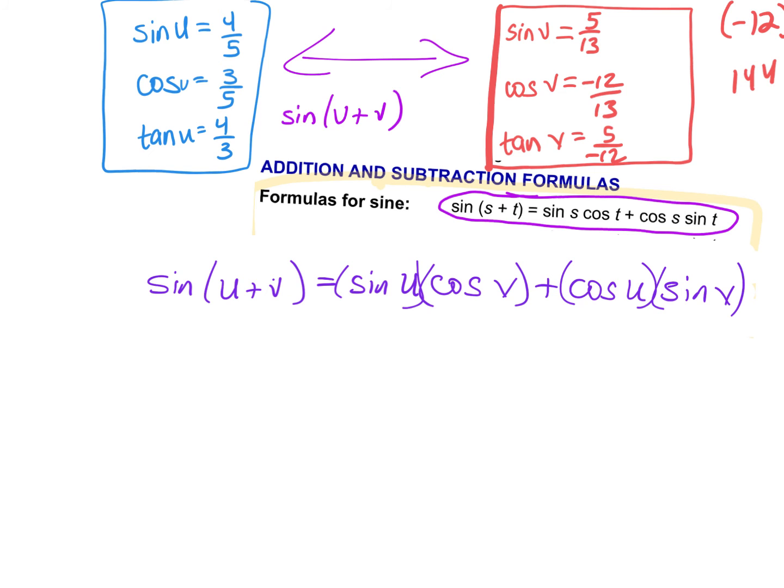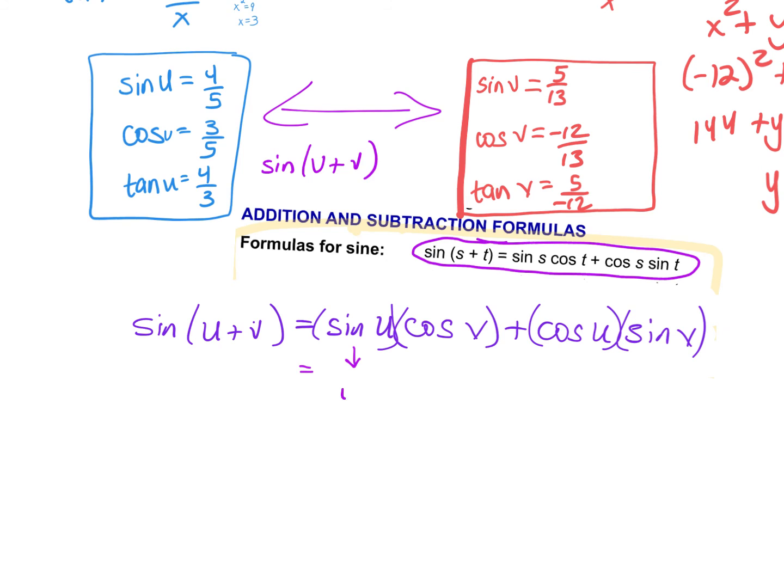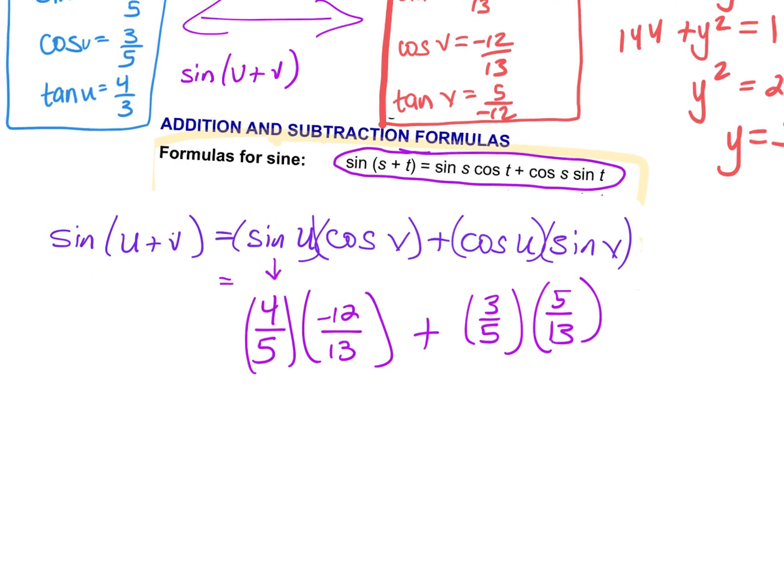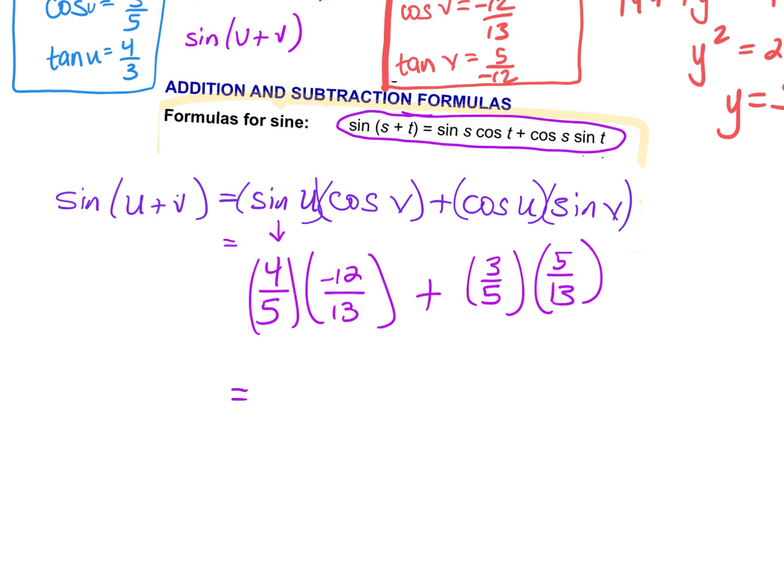I'm literally going to say sine of U is 4 over 5. So 4 over 5 times the cosine of V, that's negative 12 over 13, plus the cosine of U, which is 3 over 5, times the sine of V, which is 5 over 13. Just take a second, look back at your boxes, make sure you filled everything in correctly, and now we're just going to simplify.